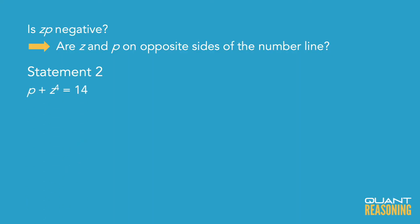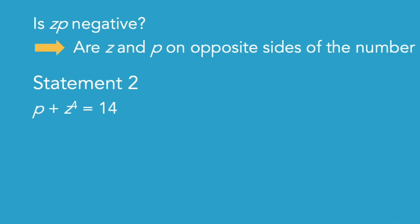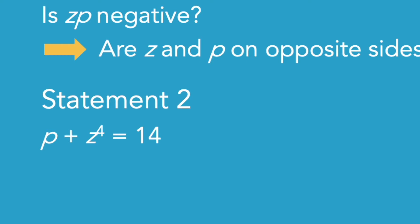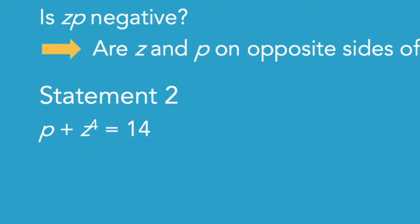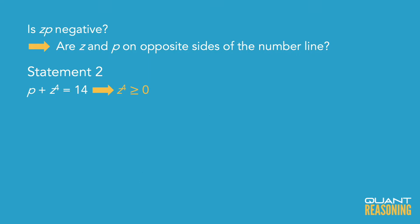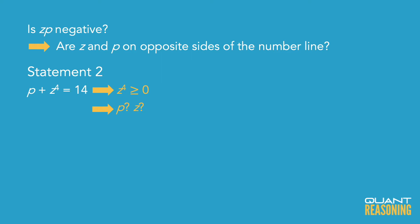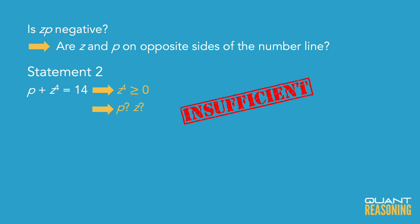Starting with statement two: we know that the sum of P and Z to the fourth power is 14. Z to the fourth power is at least zero because of the even exponent — regardless of which side of zero Z came from, multiplying Z by itself an even number of times is never negative, since the negative signs cancel out. So Z to the fourth is at least zero. When you add P to it, you get 14. That doesn't tell us which side of zero P or Z is on, or whether they're on opposite sides. So statement two is not sufficient, and we eliminate B and D — down to ACE.